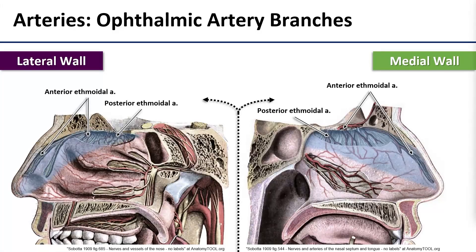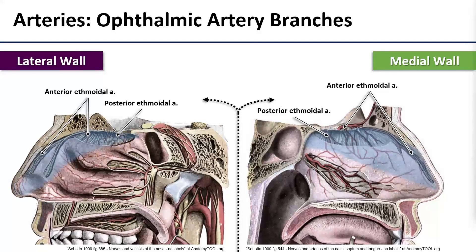The branches from the ophthalmic artery are the anterior and posterior ethmoidal arteries. These branches originate in the orbit and then travel through the medial wall of the orbit to enter the nasal cavity, where they supply the anterior and superior nasal cavity walls, both medial and lateral.